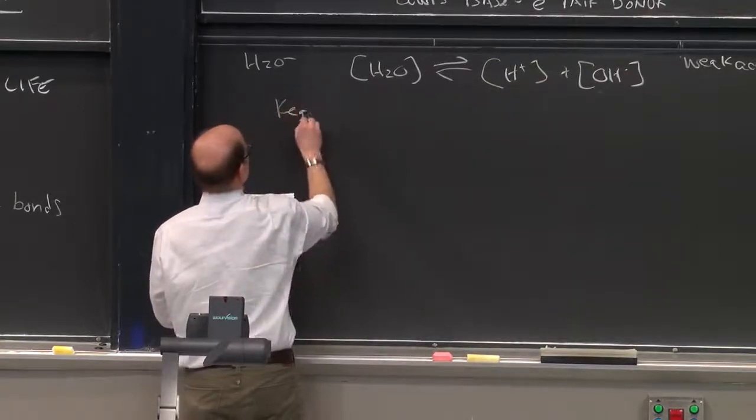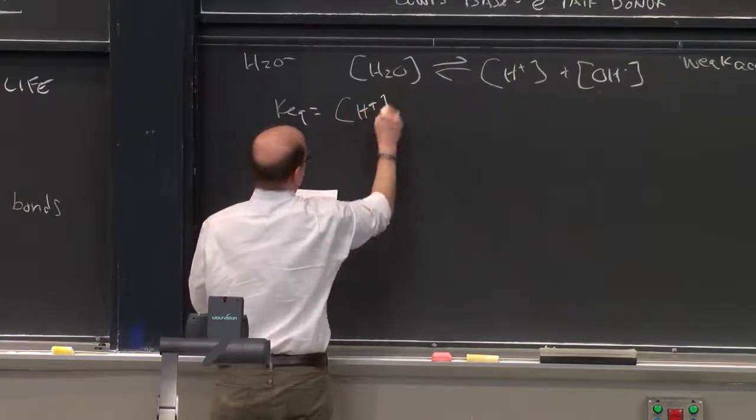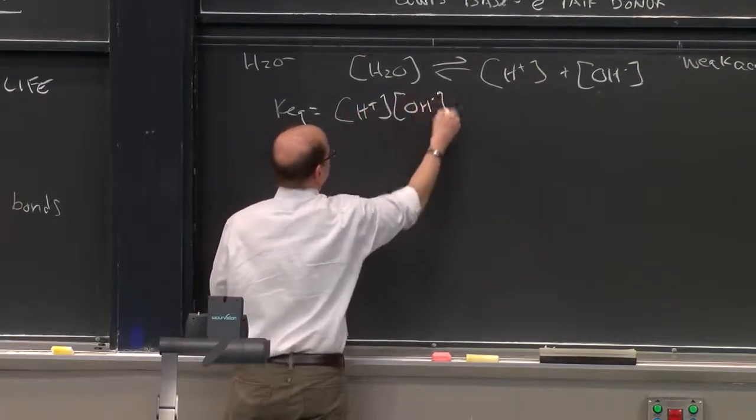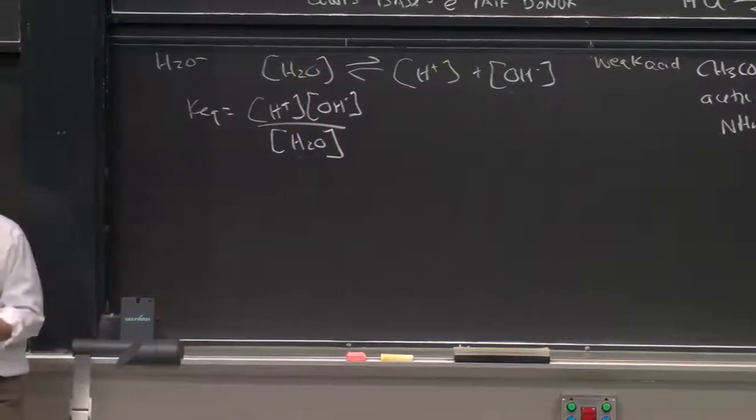We can simply define an equilibrium constant for this, which is equal to the equilibrium constant as traditionally reflected, over the concentration of H2O. Now, what does this mean, the concentration of H2O?